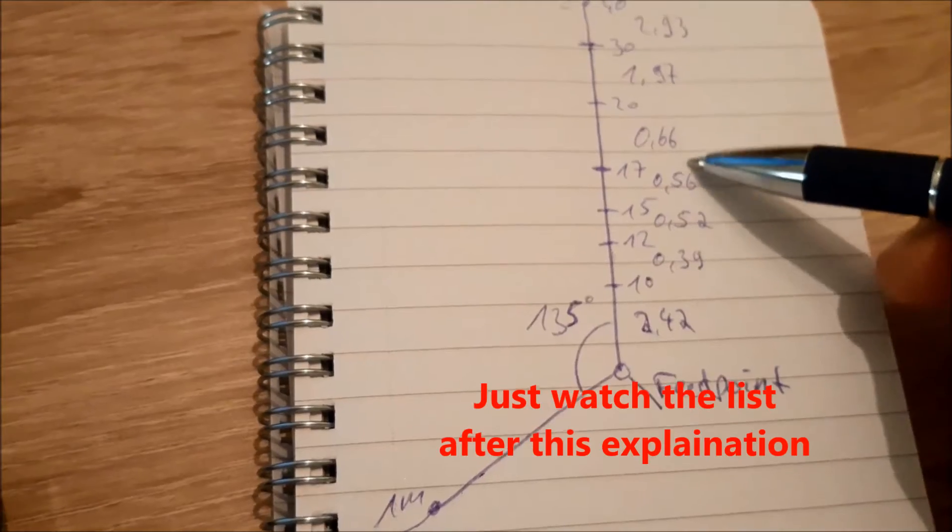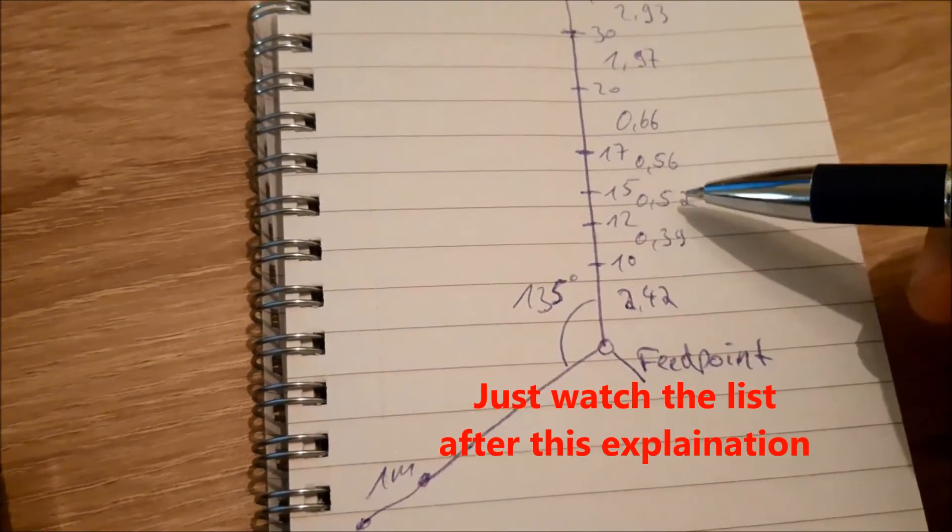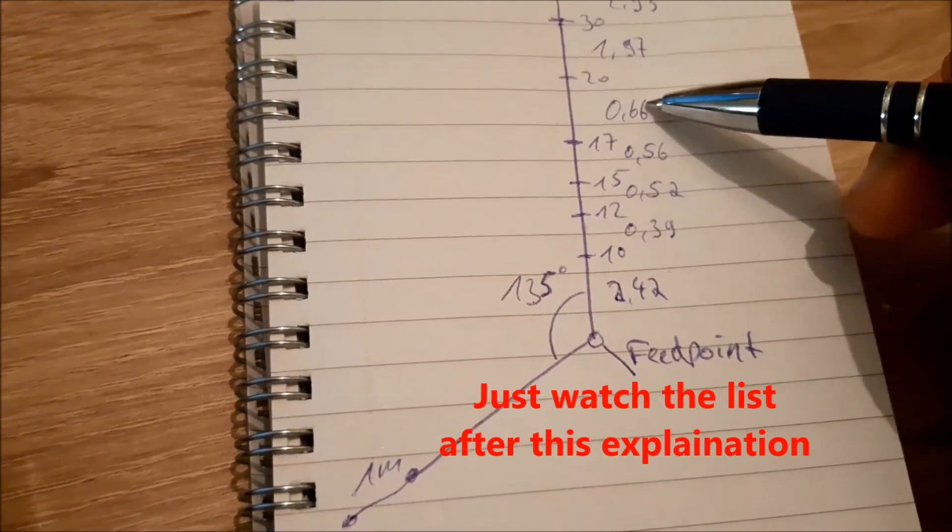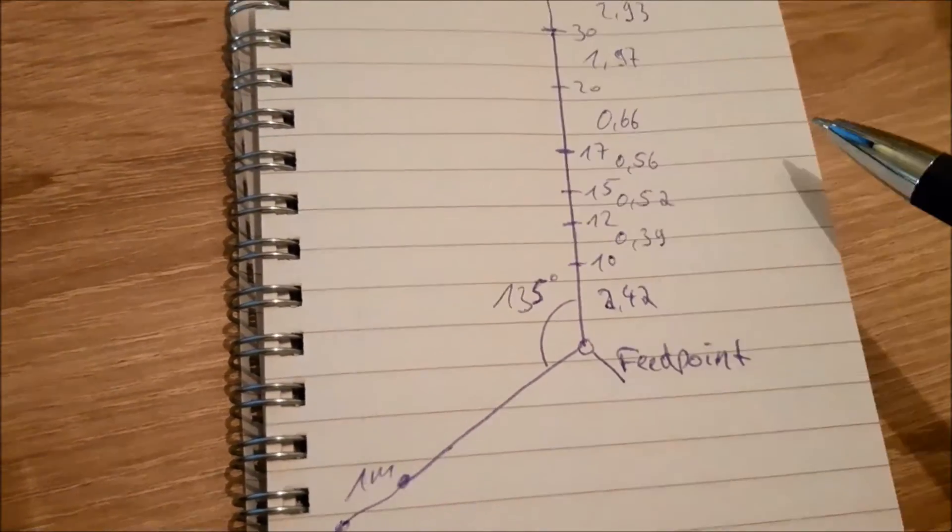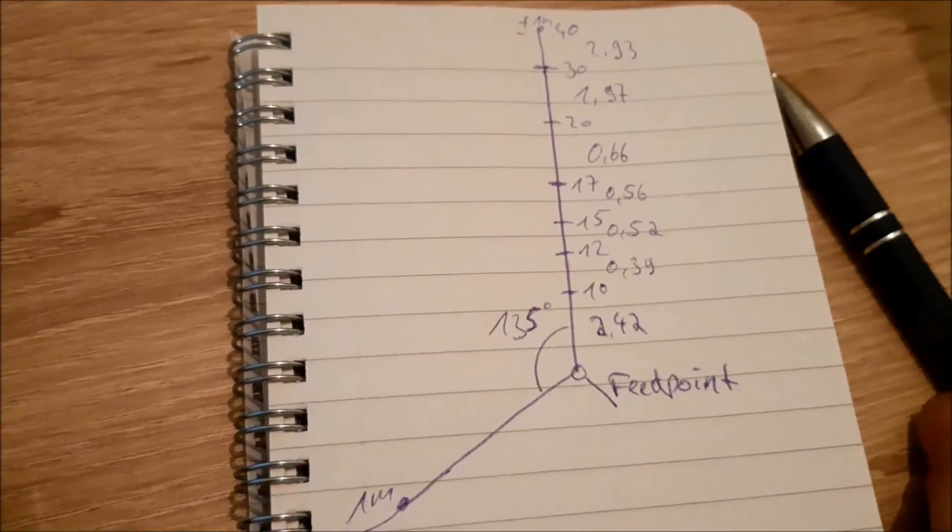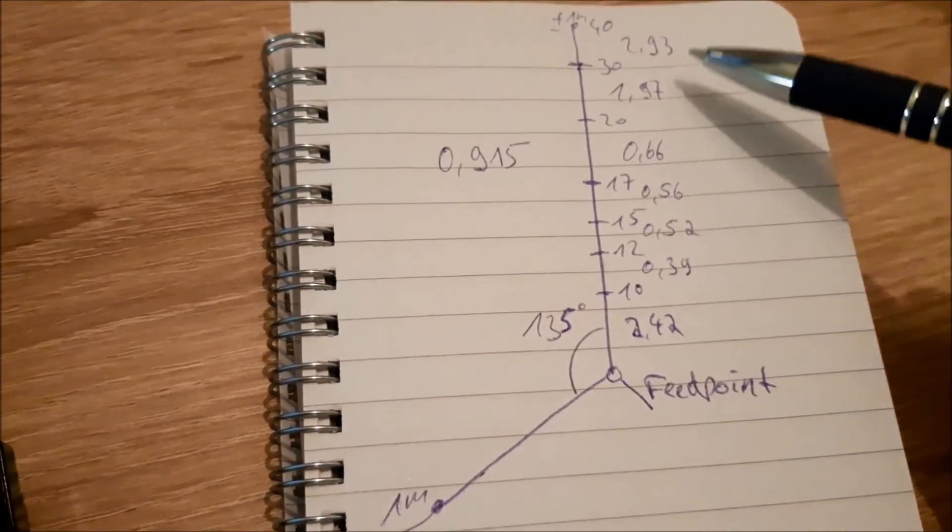0.56m, 0.66m, 1.97m, and 2.93m. Those are the lengths with the knobs. So you have to lengthen this to exactly these measurements here and you will reach the perfect SWR. But every type of wire is different. It's just a sample.